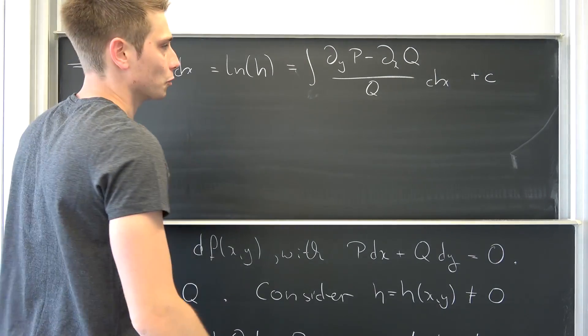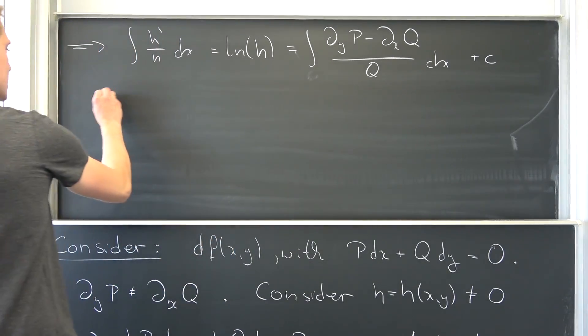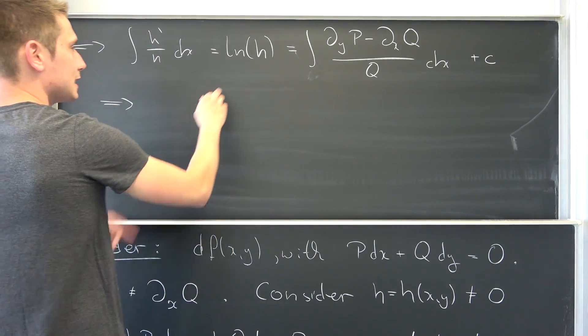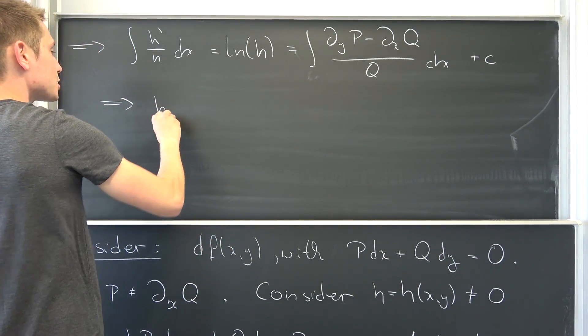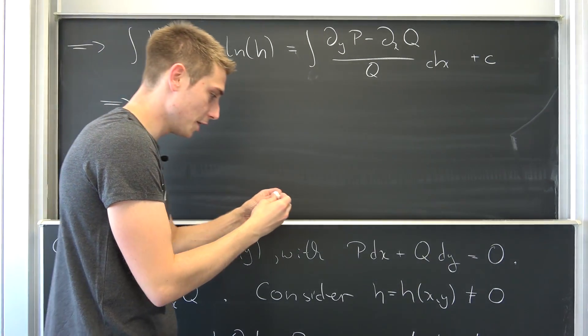Using exponentiation on both sides with base e, this implies that e to the natural log of H is nothing but H, being equal to — HAGOROMO CHALK! NO!